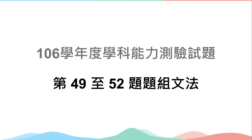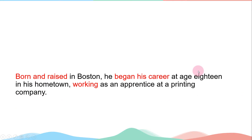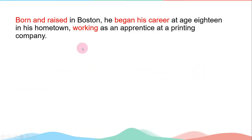各位同学，我们今天来看第49-52題題組的文法。我們來看第一個句子：Born and raised in Boston, he began his career at age 18 in his hometown, working as an apprentice at a printing company.